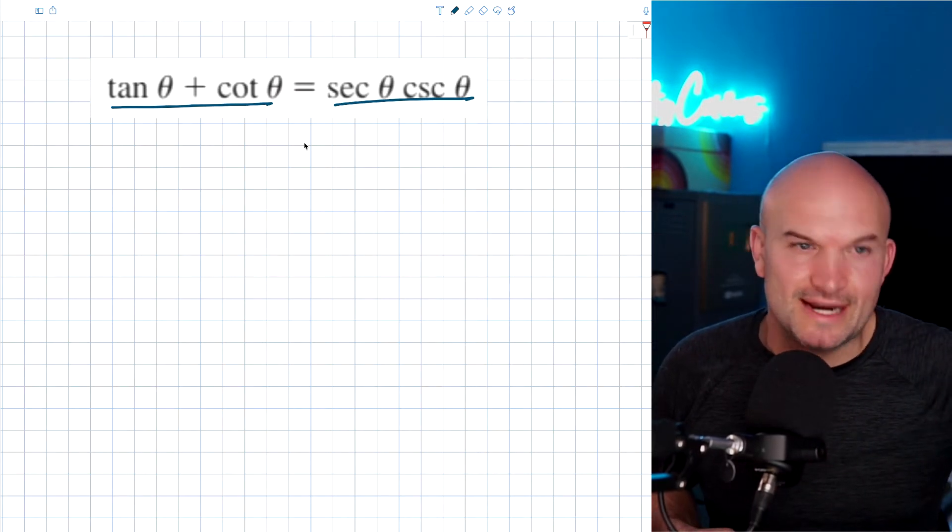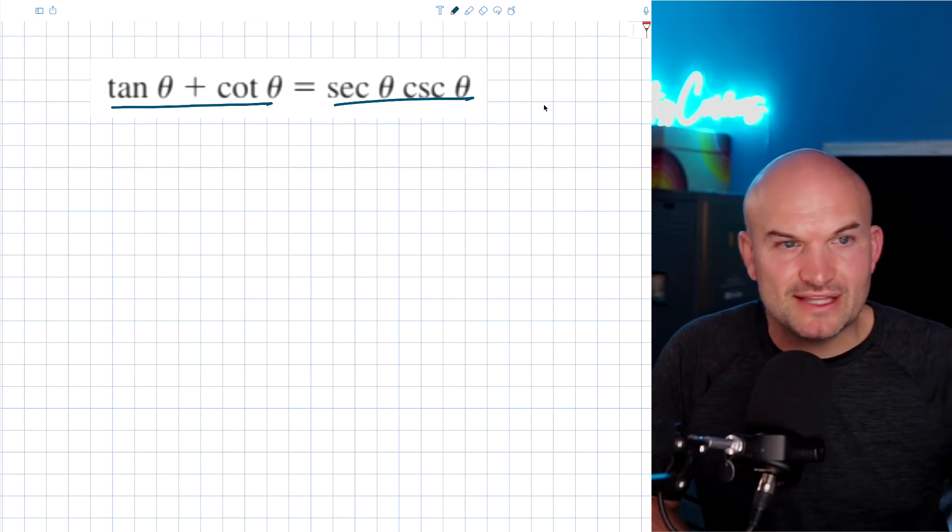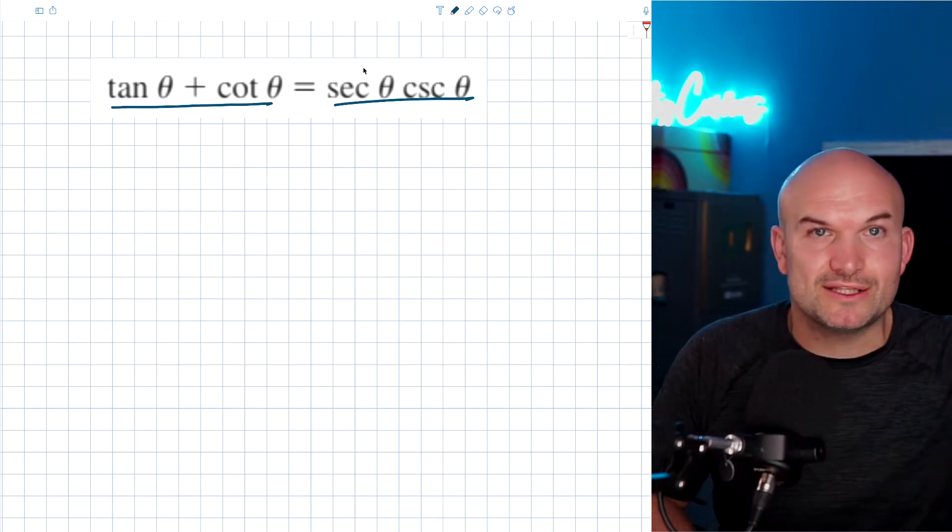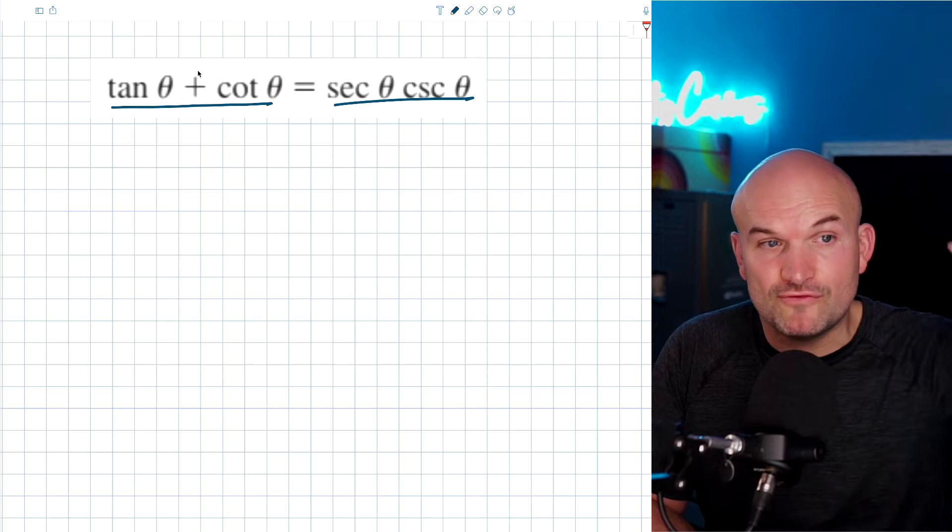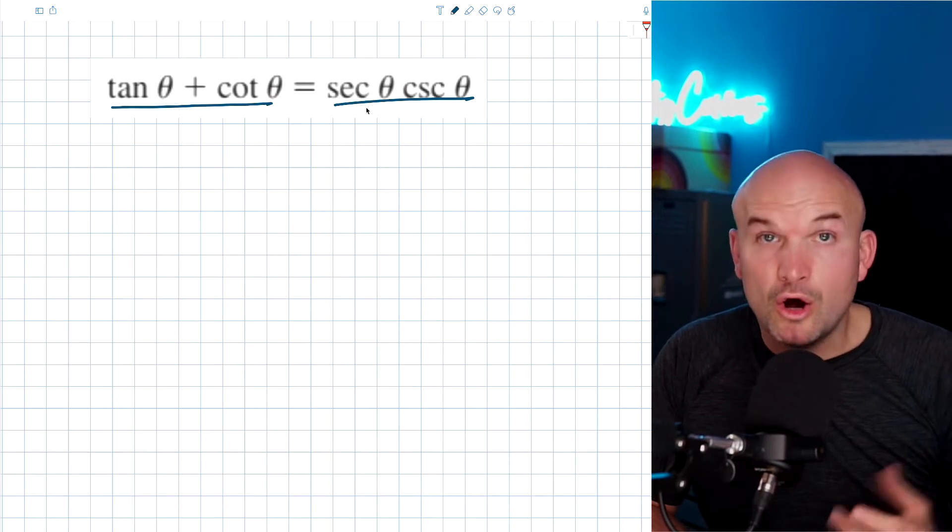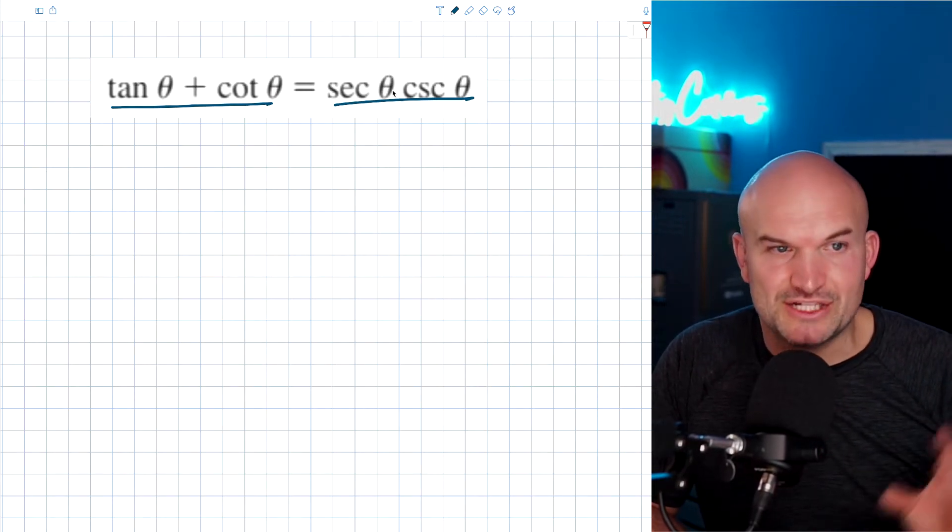Well, the way I like to look at this is, we want the left side to look like the right side or the right side to look like the left side. So what we got to think about is, is it easier to go from addition to multiplication, or is it easier to go from multiplication to addition?